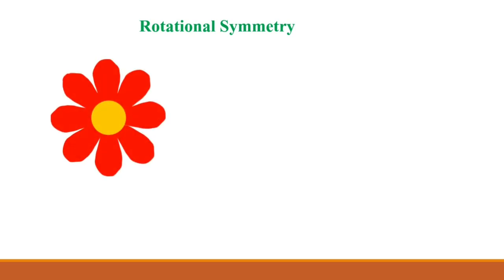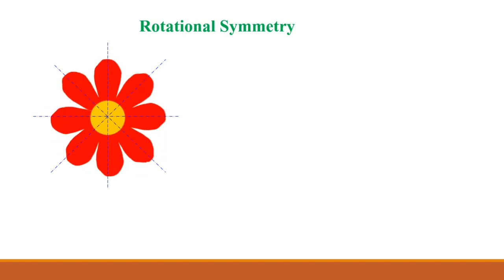Rotational symmetry — you can see here a flower. This flower has lines of symmetry. It can be rotated clockwise or anti-clockwise. When we rotate this flower, it automatically looks the same. This means we show rotational symmetry. We say that when we rotate this object, it actually looks the same in different positions.